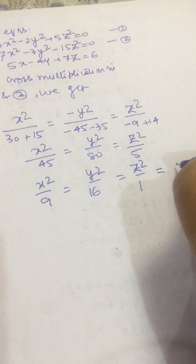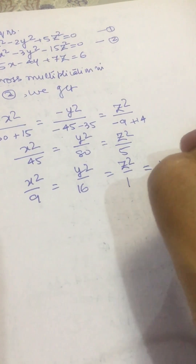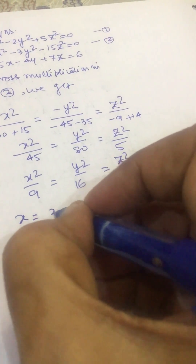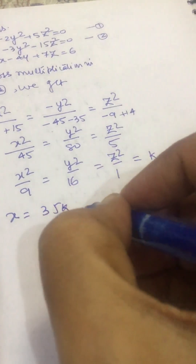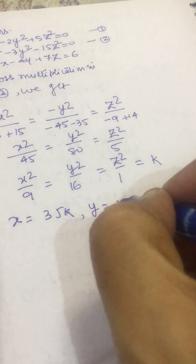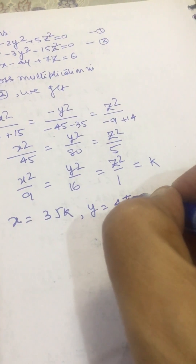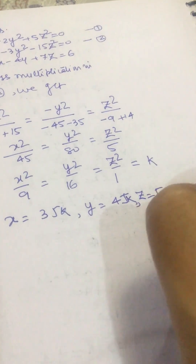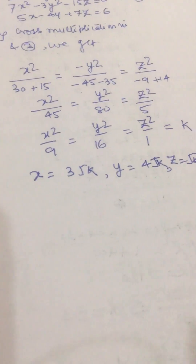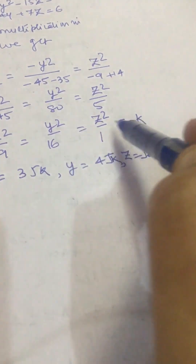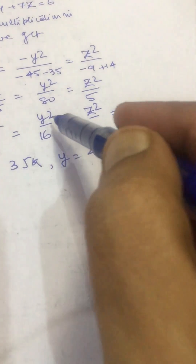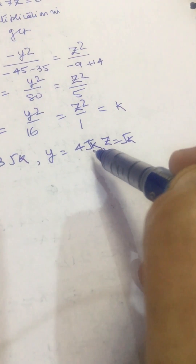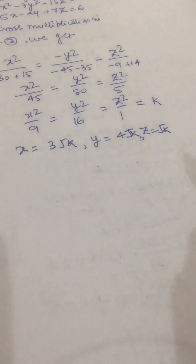Let us say this ratio is equal to k. So we can write x equal to 3√k, y equal to 4√k, and z equal to √k, since x² equals 9k giving square root 3√k, y² equals 16k giving 4√k, and z² equals k giving √k.